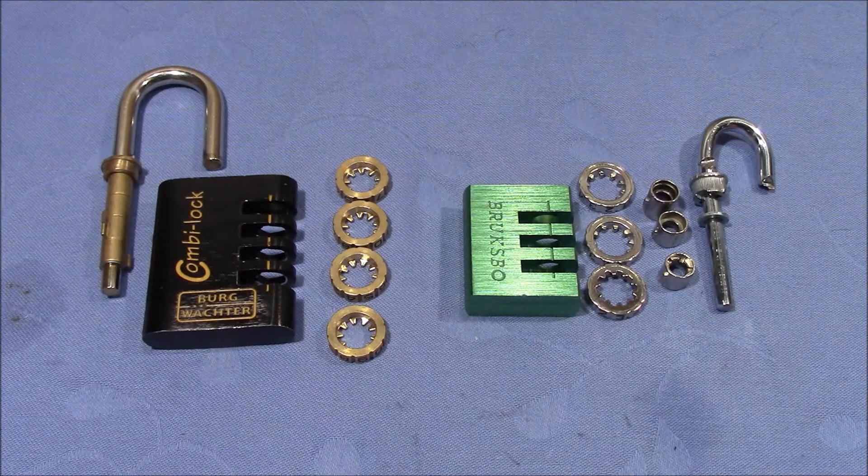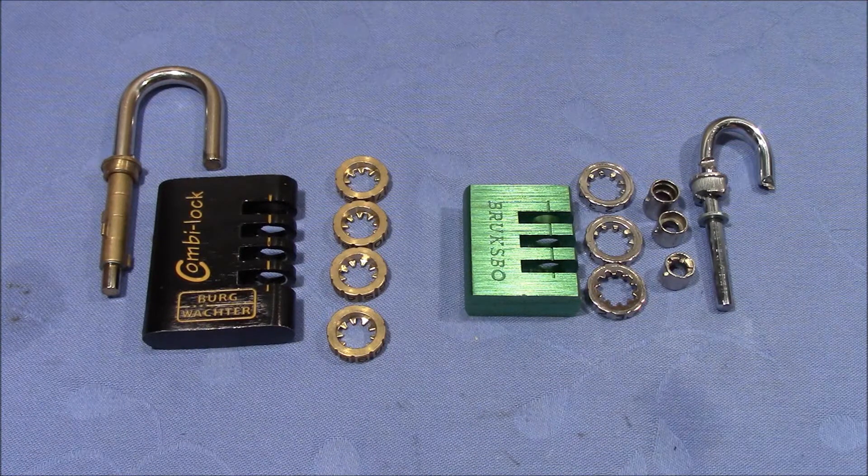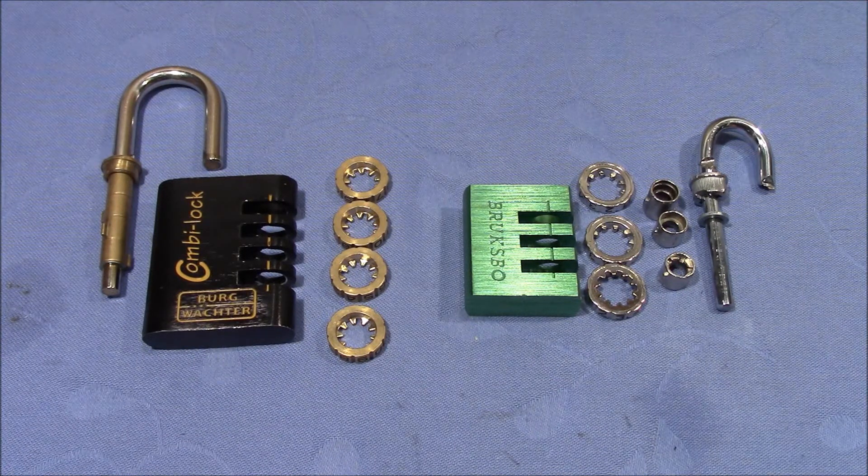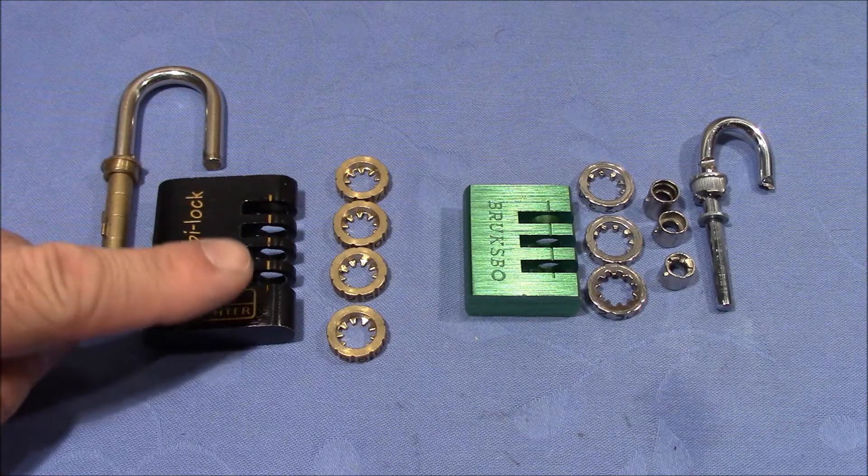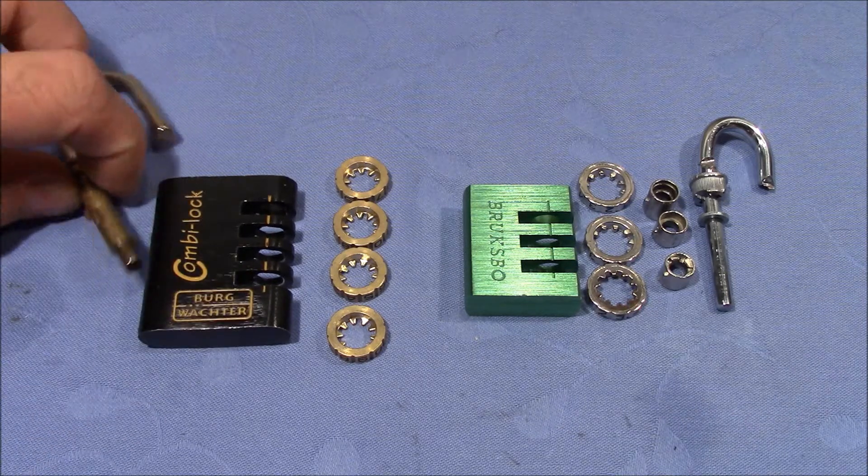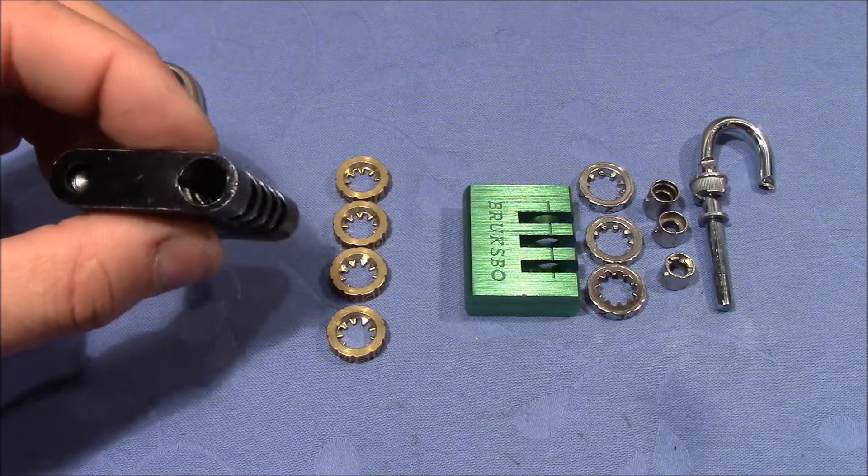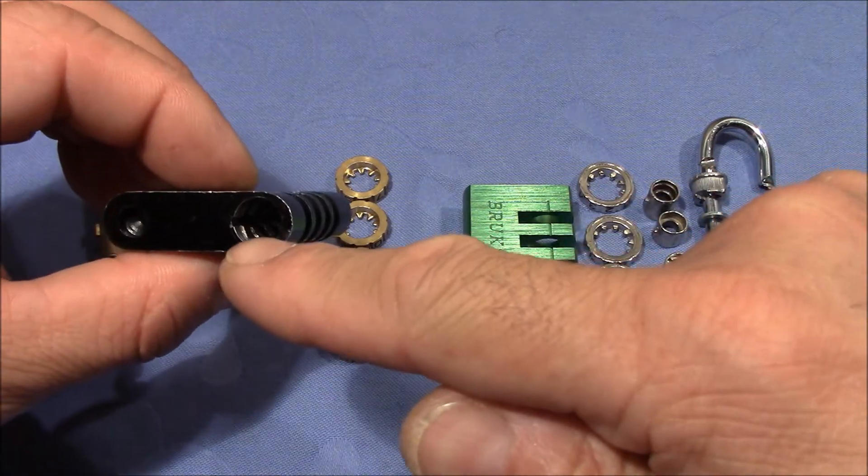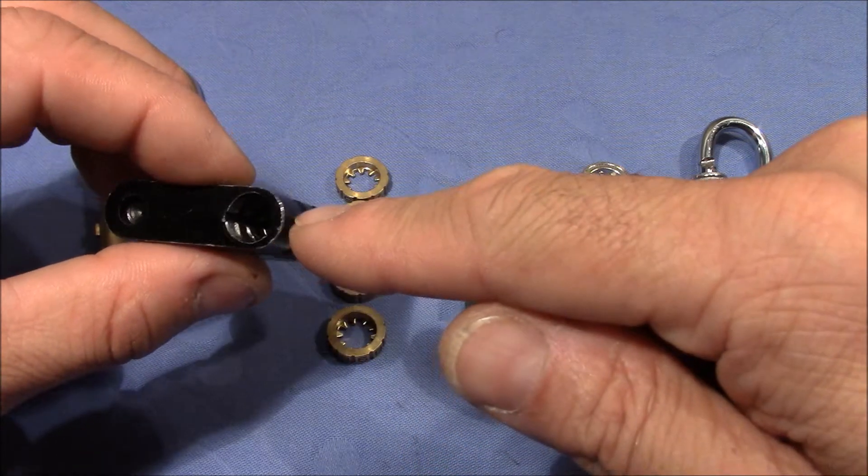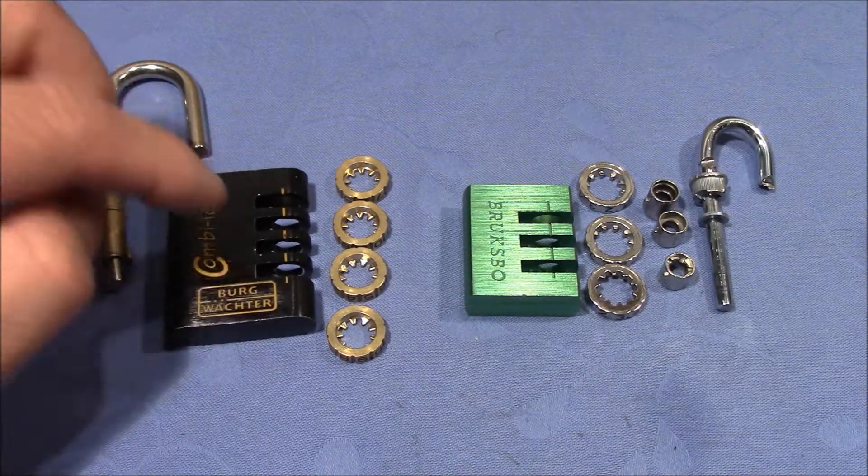So here are both locks taken apart, and indeed there is a remarkable difference in the design. Roughly speaking, on the Burgwächter, you turn the teeth of the inner wheels to hopefully meet the position of the true gate, which is built in the lock body.